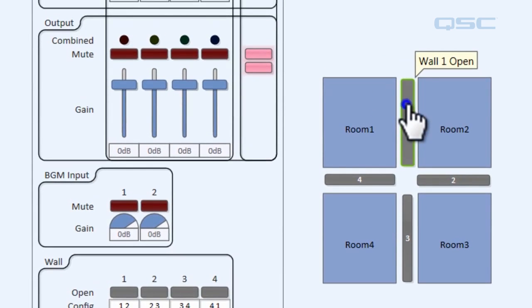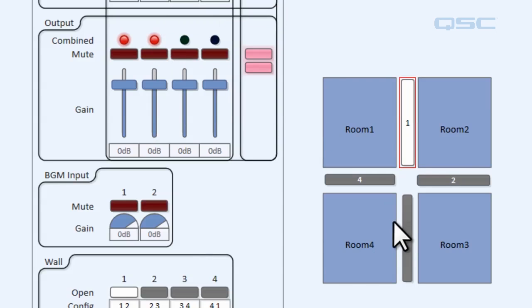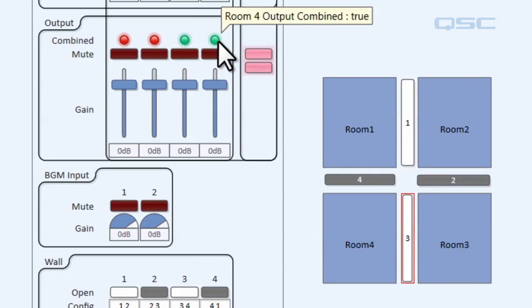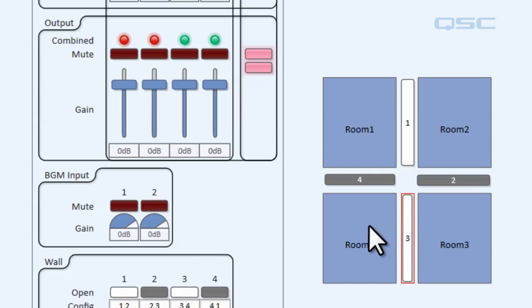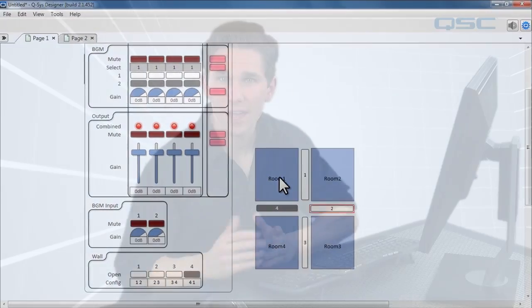If we open wall one by clicking on it we get two red LEDs, which signify that room one and room two are now sharing the same audio signal. Doing the same with wall three gives us two green LEDs, meaning room three and four share the same audio signal — but room one and four have separate signals, so there are two separate colors. If we click on wall two we get all reds, meaning rooms one, two, three, and four are all sharing the same audio signal. That's a good stopping point — take a break if you need to, or continue on to the next section.